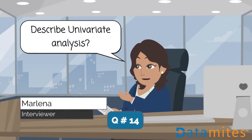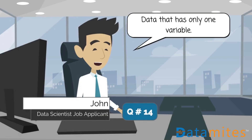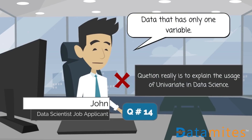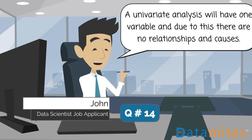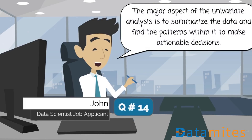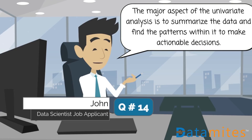Describe univariate analysis. Univariate analysis deals with data that has only one variable. Due to this, there are no relationships or causes. The major aspect of univariate analysis is to summarize the data and find the patterns within it to make actionable decisions.